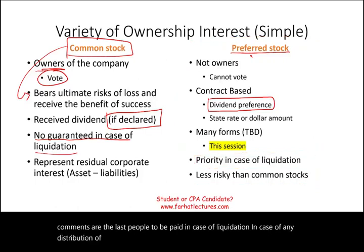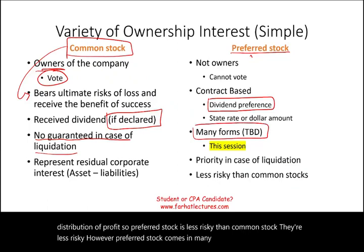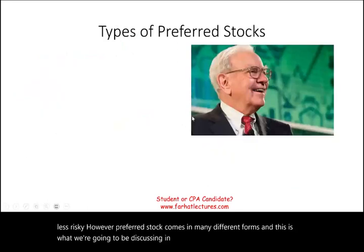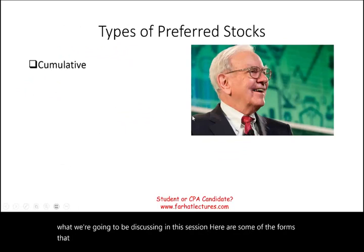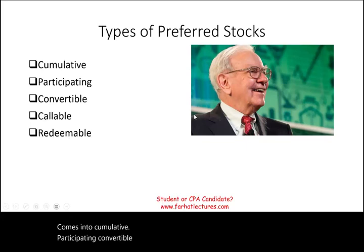Preferred stock is less risky than common stock. However, preferred stock comes in many different forms, and this is what we're going to be discussing in this session. Here are some of the forms: cumulative, participating, convertible, callable, and redeemable.